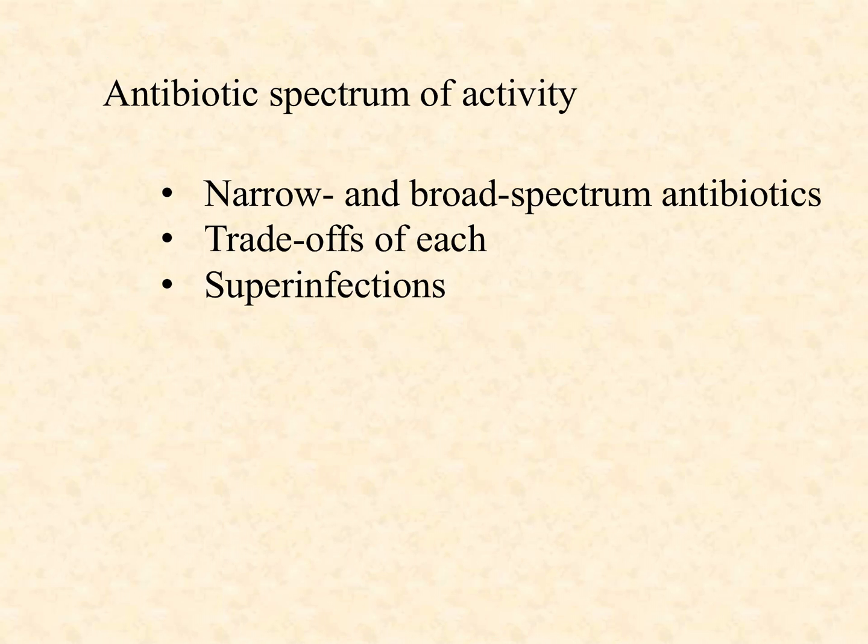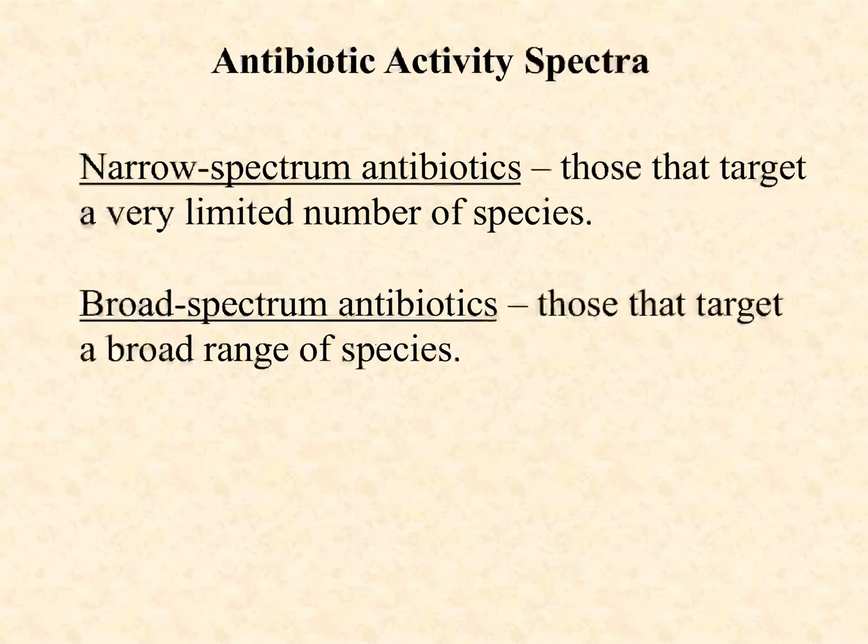There's a real important principle here called spectrum of activity — in other words, what microbes is a particular drug useful against? We're going to talk about narrow spectrum antibiotics that are useful against a limited number of bacteria, broad spectrum antibiotics that are good against a lot of bacteria, and the trade-offs for each. And then I'm going to leave you with the idea of super infections, which is a possible complication from using broad spectrum antibiotics in particular.